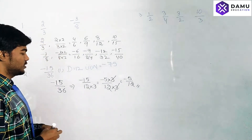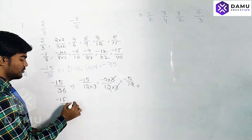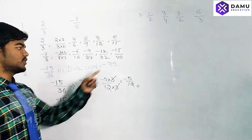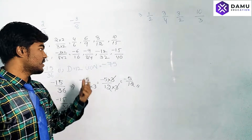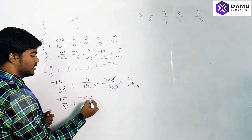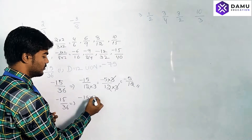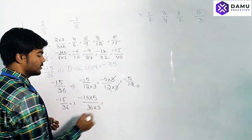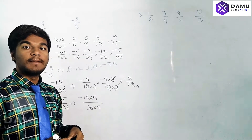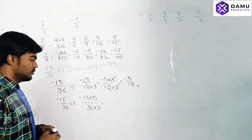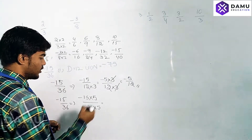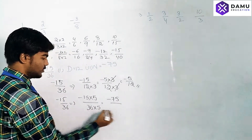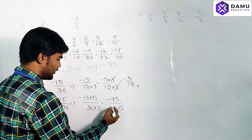Now for -15/36, we need to write it with numerator -75. Since 75 is greater than 15, we need to multiply. -15 × 5 = -75 in the numerator. Then 36 × 5 = 180 in the denominator. So -15/36 is equivalent to -75/180.